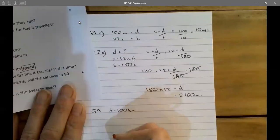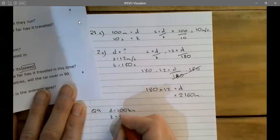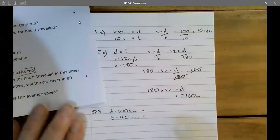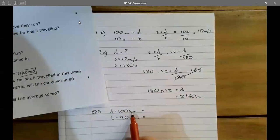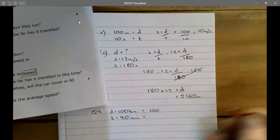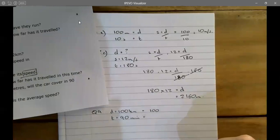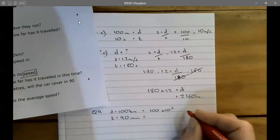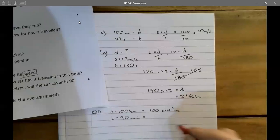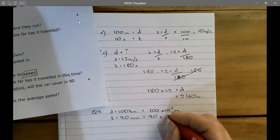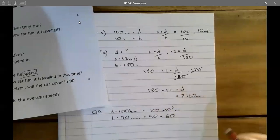What I'm going to do now is change these to SI units. Distance needs to be in meters, so 100 kilometers is 100 times a thousand, so it's 100,000 meters, or 100 times 10 to the 3 meters. 90 minutes is 90 times 60, so that's going to be equal to 5,400 seconds.